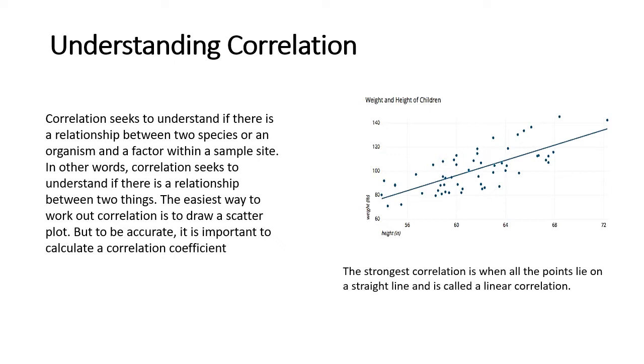I would advise that you have a pen, paper, and your calculator close by so you can follow some of the calculations. Correlation seeks to show if there's a relationship between two species or between an organism and a factor within a sample site. The value of the correlation test is usually between zero and one. The closer to one the value is, the stronger the correlation, and the closer to zero the value is, the lesser the correlation.